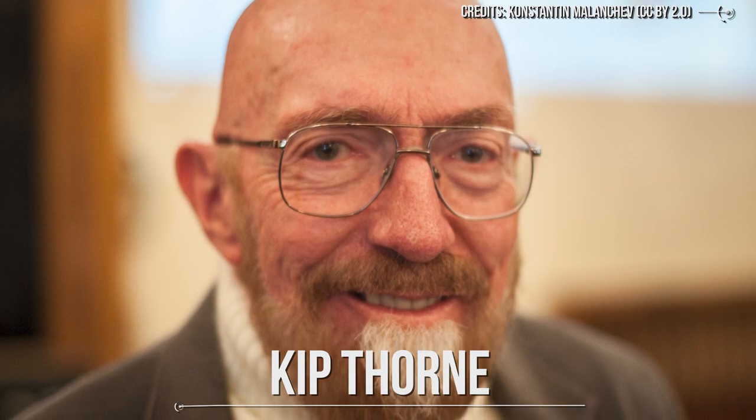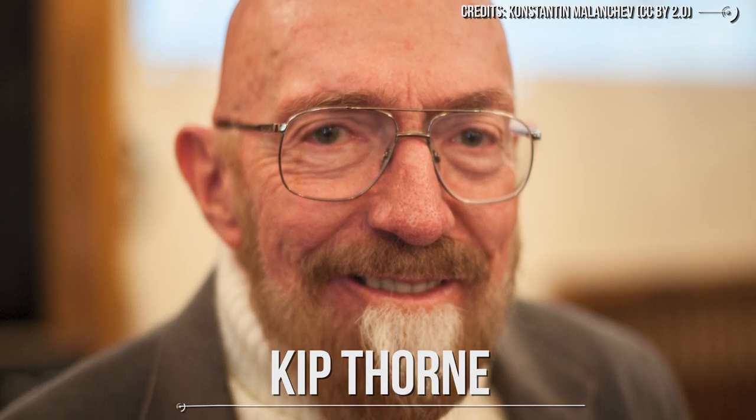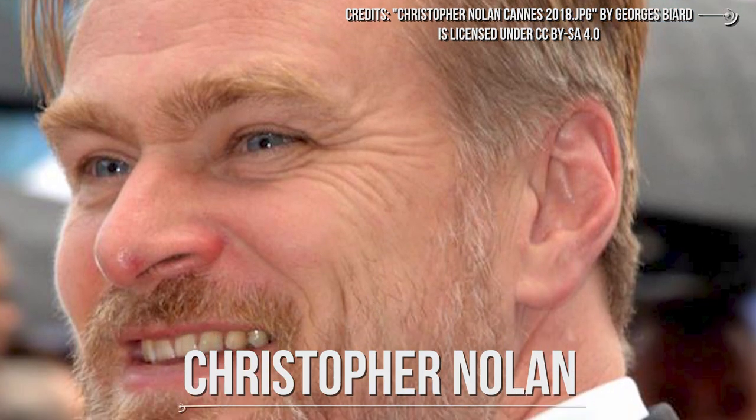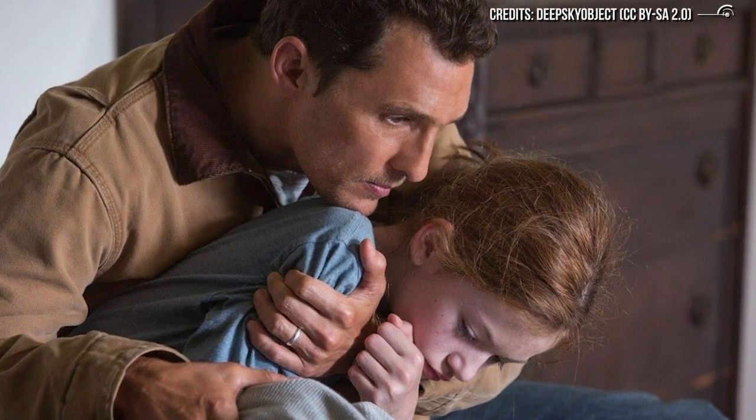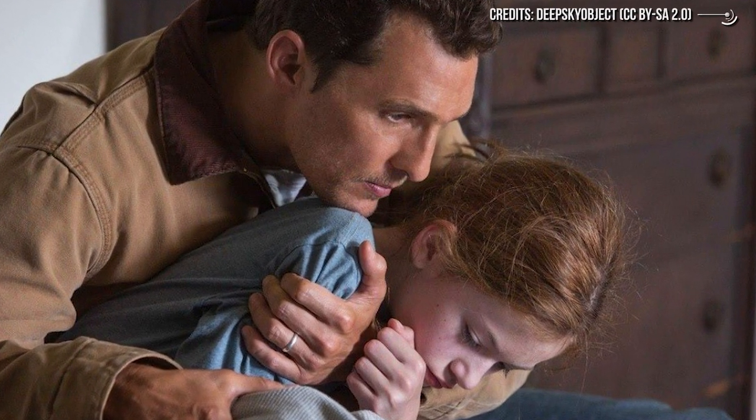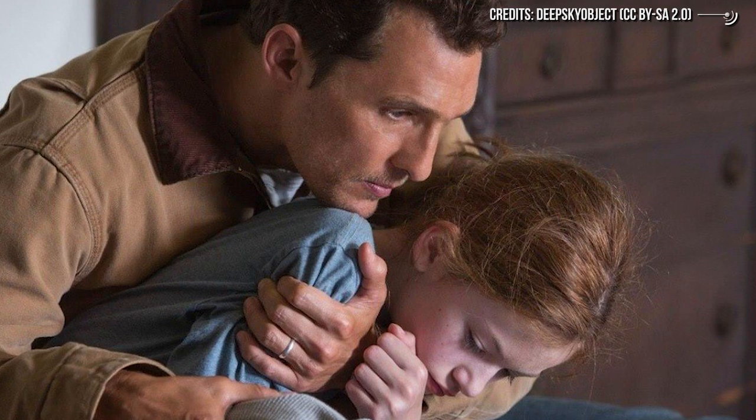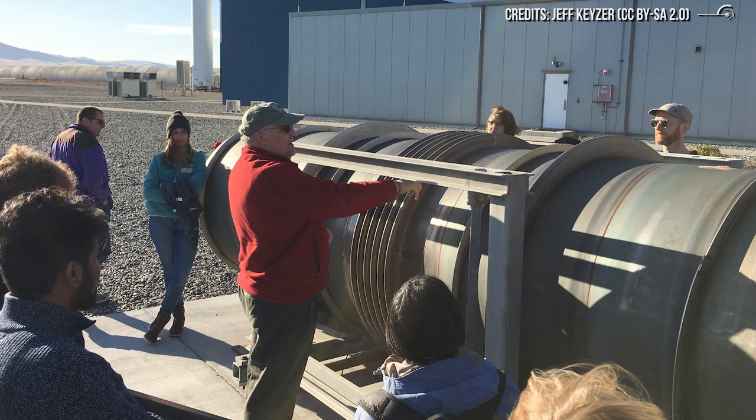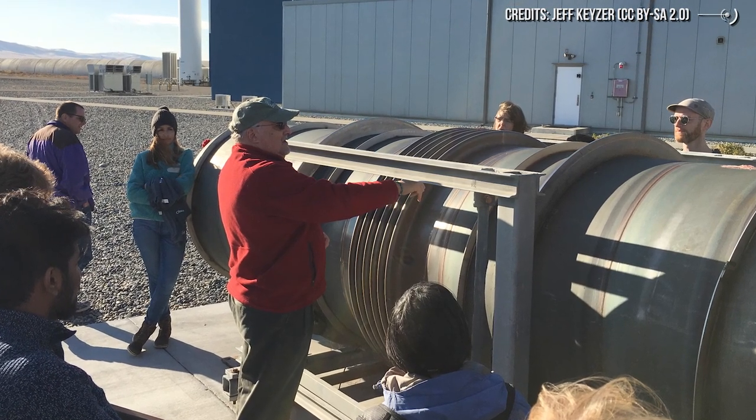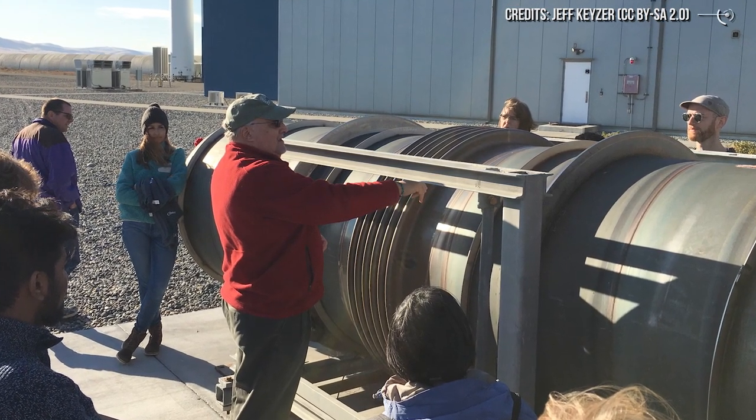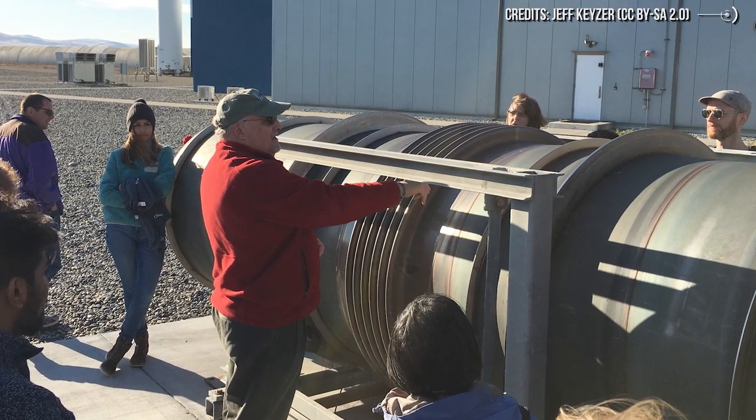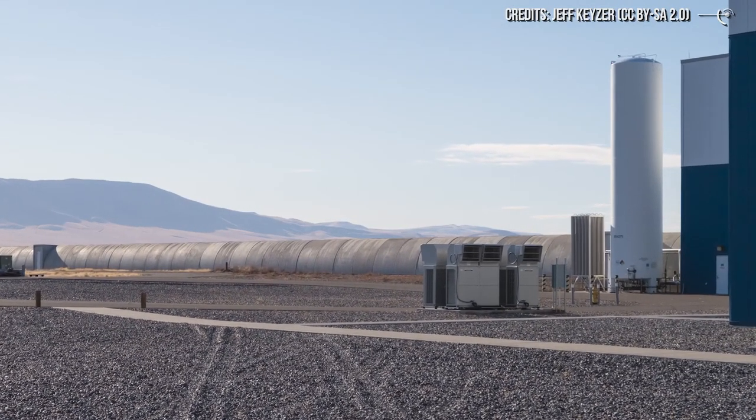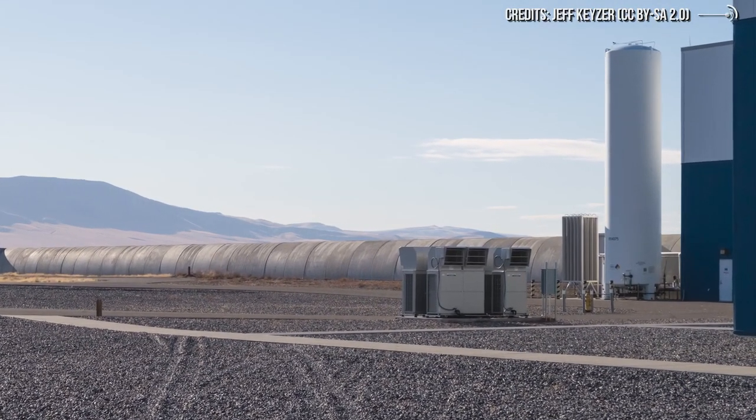One of its creators is the scientist Kip Thorne, who is famous among the general public for having been the scientific advisor to director Christopher Nolan during the writing of the script of the film Interstellar in 2014. Thorne was convinced that gravitational waves existed to the point of betting with Stephen Hawking on their discovery. LIGO is located in the United States and consists of two twin but separate interferometers managed as a single large observatory. One facility is located in Livingston, Louisiana, the other in Hanford, Washington, over 3,000 miles away.